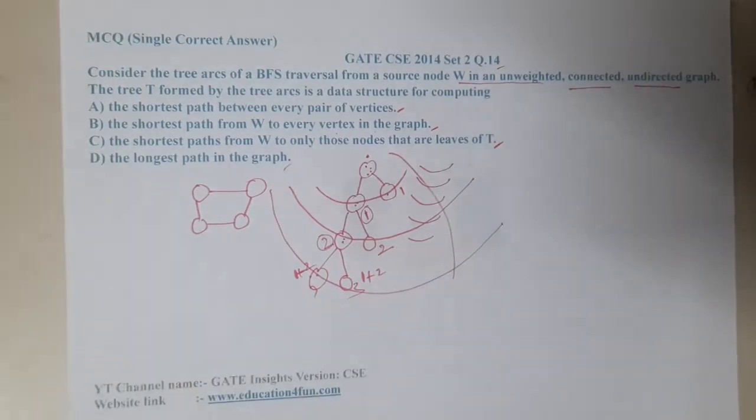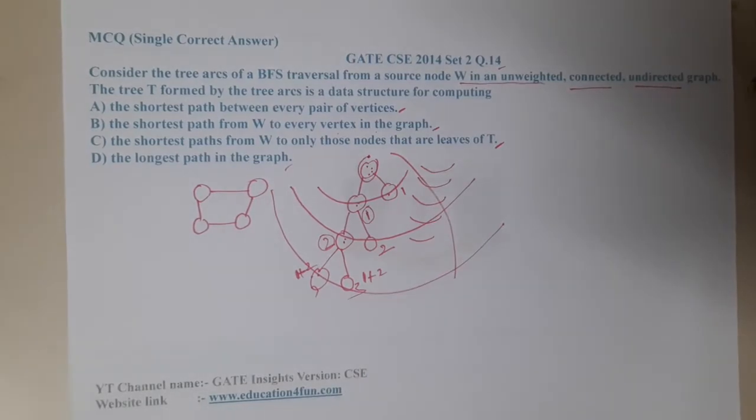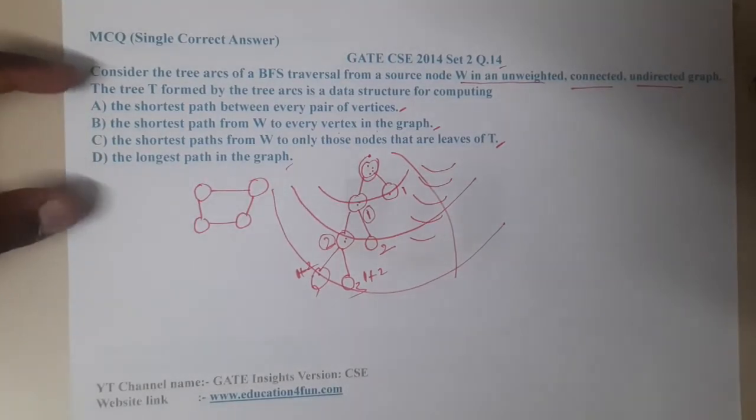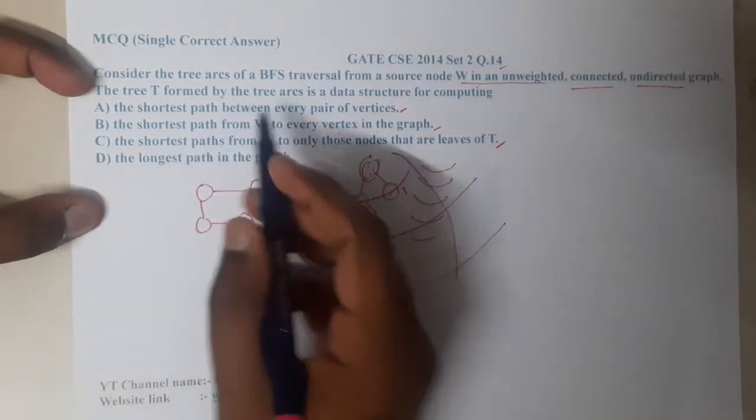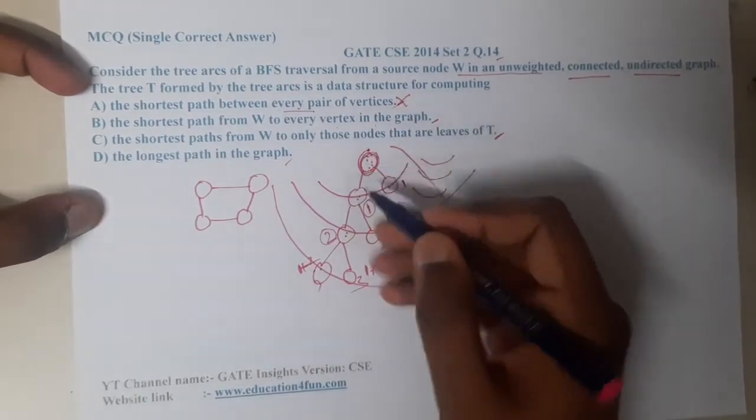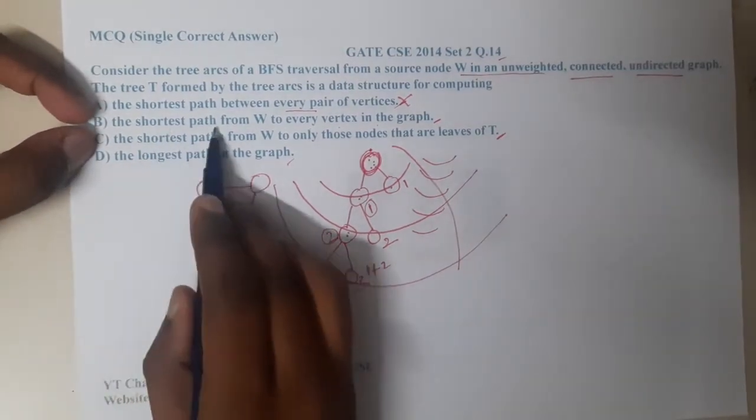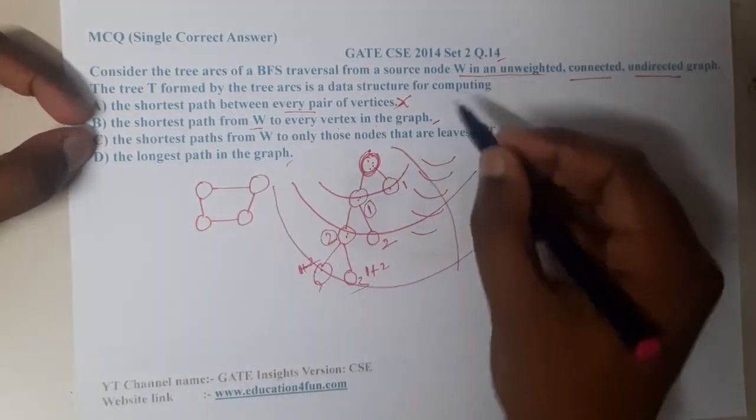Now you can easily identify the option. It finds the shortest distance between every pair? No, it's only finding from root vertex to each and every vertex. The second option, the shortest path from W to every vertex? Yes, this sounds really good.